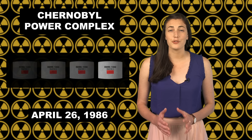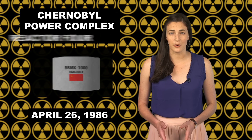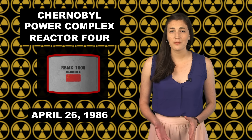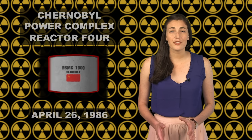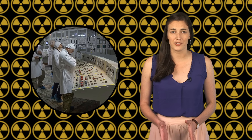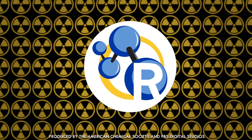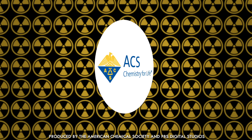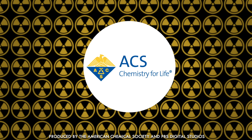On April 26, 1986, the Soviet Union's Chernobyl Power Complex Nuclear Reactor 4 exploded. The explosion was caused by major fundamental flaws in the reactor design, on top of a total disregard for protocol by some of the higher-ranking people in charge, despite some serious reservations from more junior members of the staff. But before we get into all of that, let's start at the beginning, with nuclear energy.